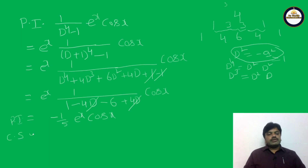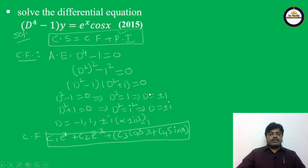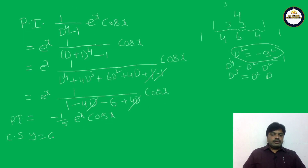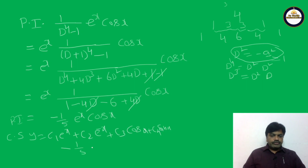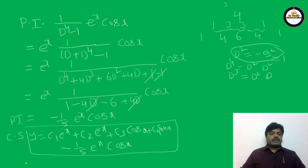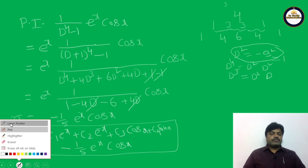The complete solution is: y = c₁e^x + c₂e^(-x) + c₃ cos x + c₄ sin x - (1/5)e^x cos x. This is the required solution of the given problem.